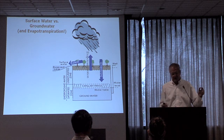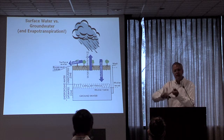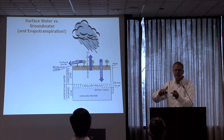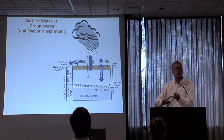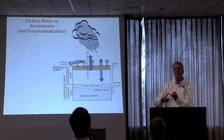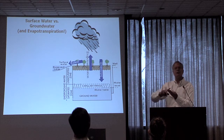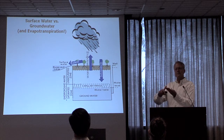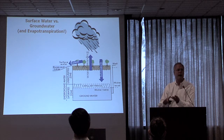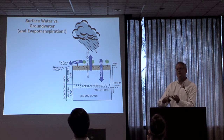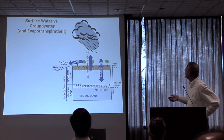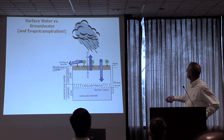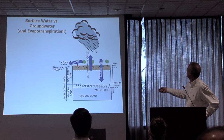Some tools to do that are maximizing infiltration and maximizing evapotranspiration. The way the permit's laid out, you have to look at infiltration, evapotranspiration, or actually harvesting and using the water — like for irrigation or toilet flushing. If those aren't feasible, the next thing you can go to is bio-treat and release. And if that's not feasible, then you put in some kind of BMP. The goal of the permit is to try to reduce this runoff volume.